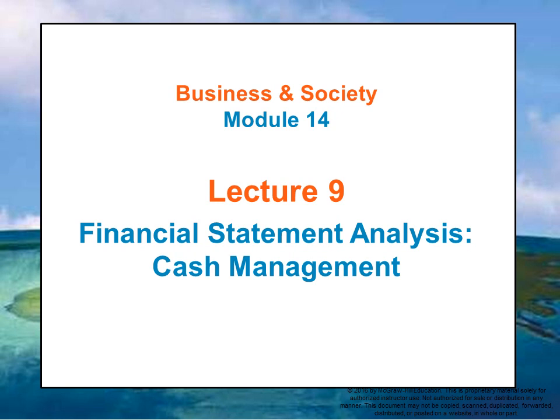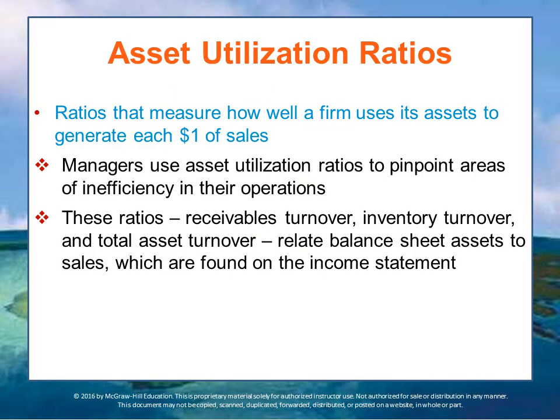In this lecture, we'll talk about financial statement analysis, specifically the cash management aspects of it. Asset utilization ratios measure how well a firm uses the assets it has, like cash and inventories, to generate revenue. For every dollar of revenue earned, we compare how well they manage their assets. Companies using their assets more productively will have higher returns on assets than their less efficient competitors.